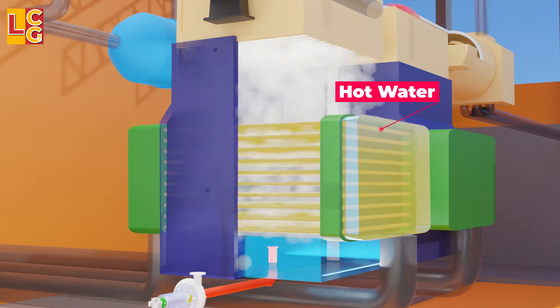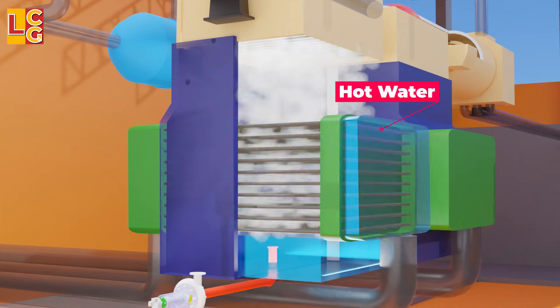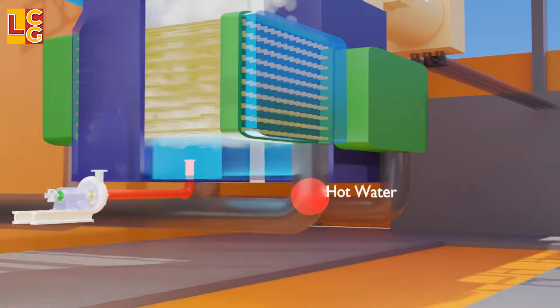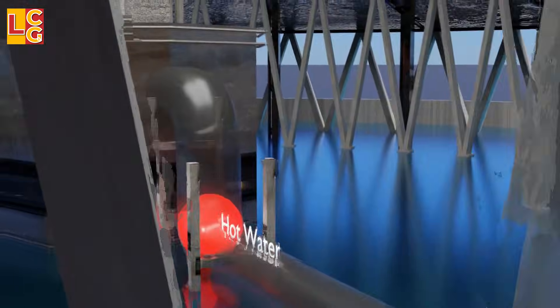Meanwhile, while the condenser is cooling the steam, the cold water inside these tubes becomes hot. The hot water is then pumped out to the cooling tower through this pipe.